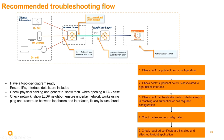Once EAPOL reaches the authenticator, communication to the AAA server is via RADIUS, so the AAA server must be reachable by the dot1x authenticator. Check the RADIUS server configuration — once everything is in place, you should be able to complete dot1x supplicant authentication and it should be easy to troubleshoot.